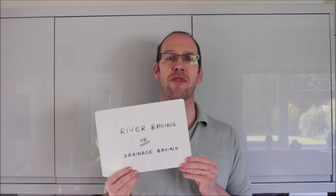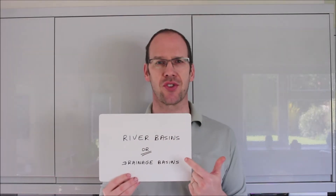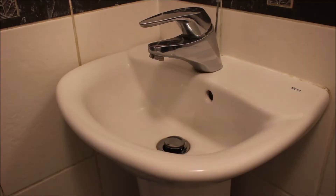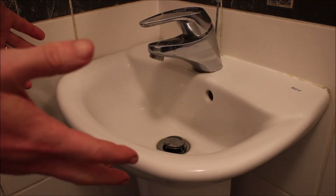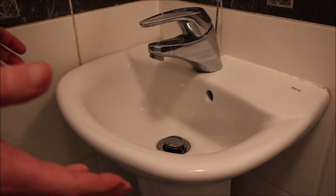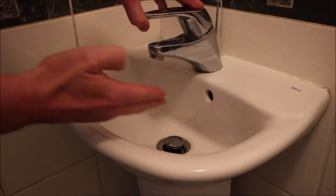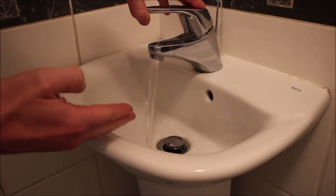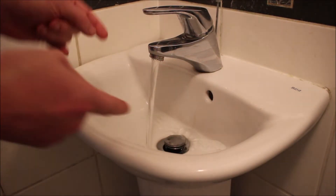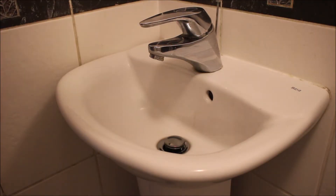This session is about river basins, also known as drainage basins. This is a sink or wash basin. The way a wash basin works is that all the water going into it is funneled down the sides and into the plug hole, and this is very similar to the way a river basin works.